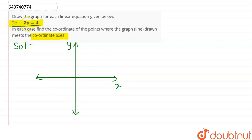Let's say y is equal to 0, so when y is equal to 0, x is equal to 2. And let's say x is equal to 0, so when x is equal to 0, y is equal to minus 4 by 3. So this is minus 4 by 3, so our line is... so this is our line.